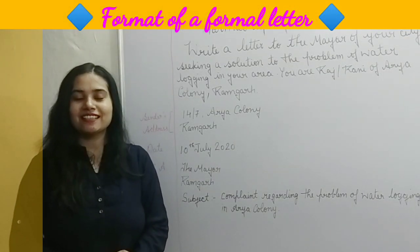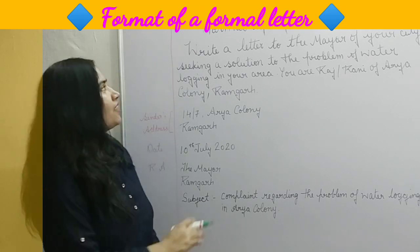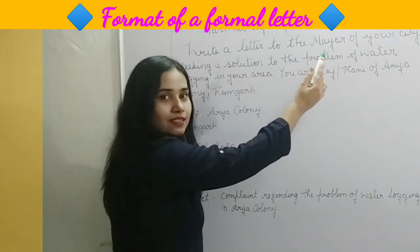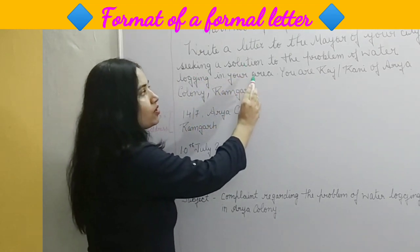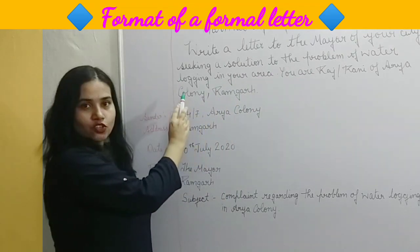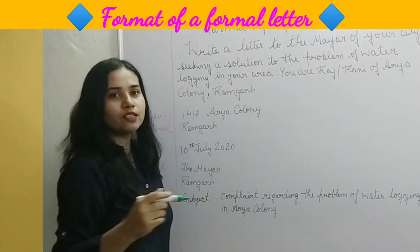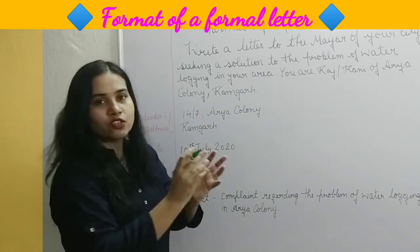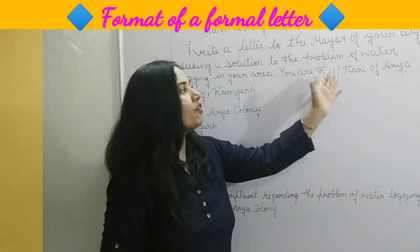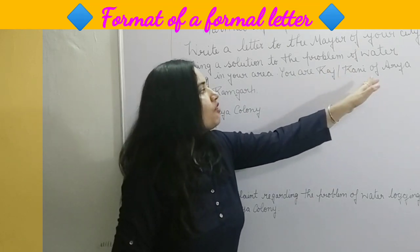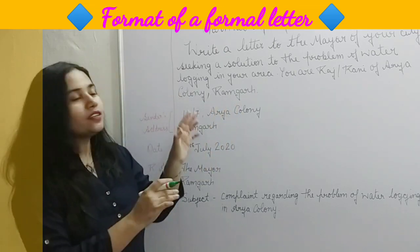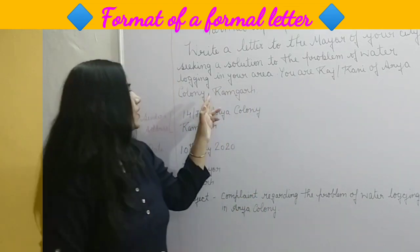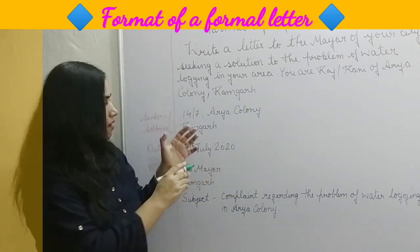Now let's discuss the format of the formal letter. Let's read the question first: 'Write a letter to the mayor of your city seeking a solution to the problem of water lodging in your area.' Water lodging means that because of rain, water fills up in the area. You are Raj or Rani, of R.A. Colony, Ramghar.